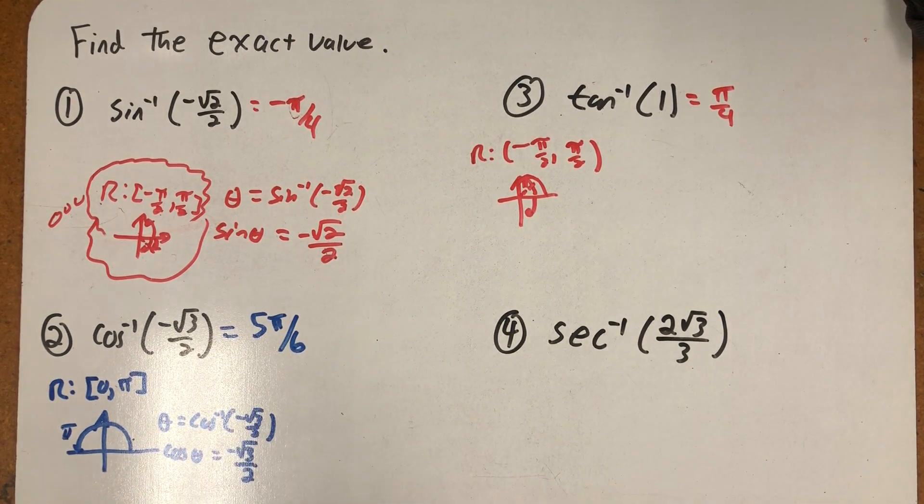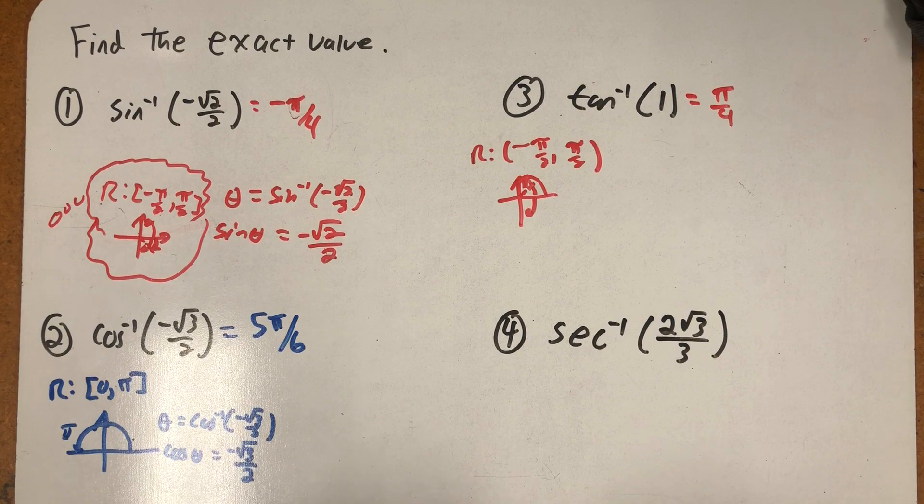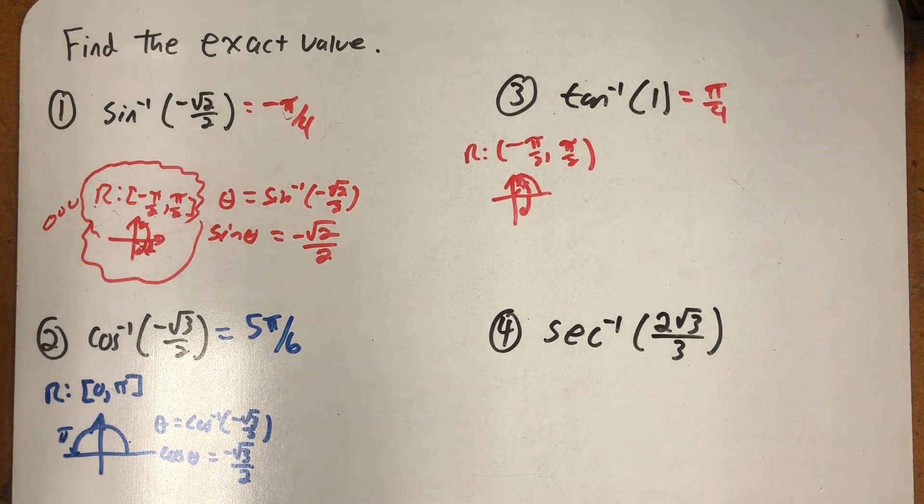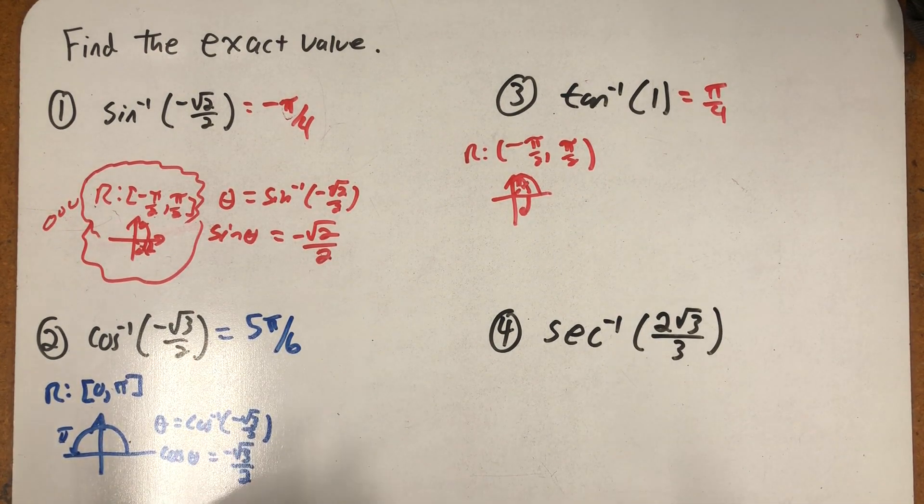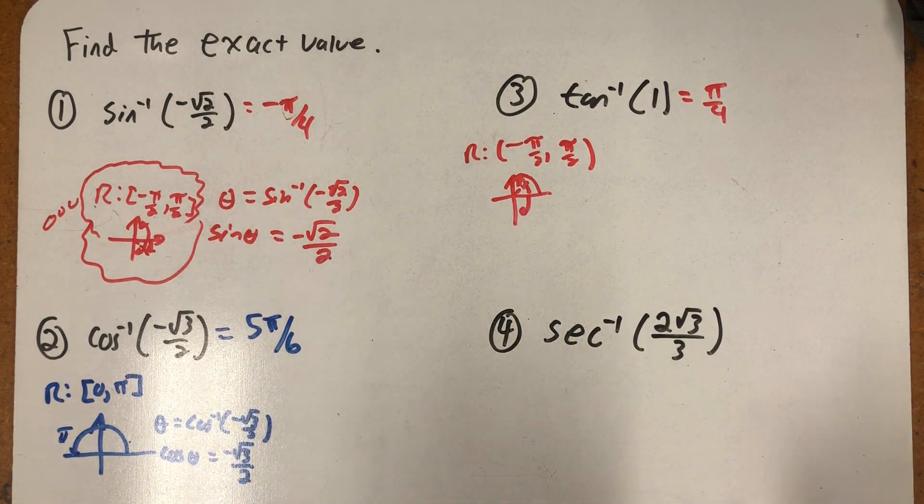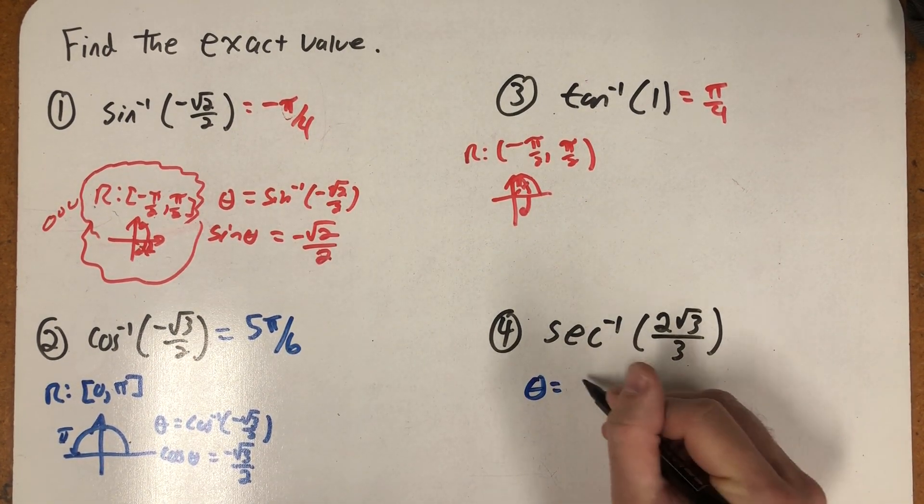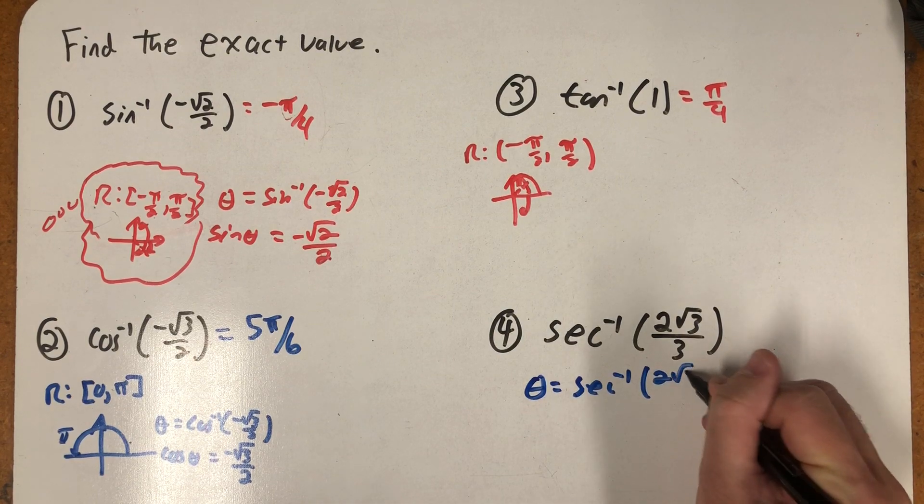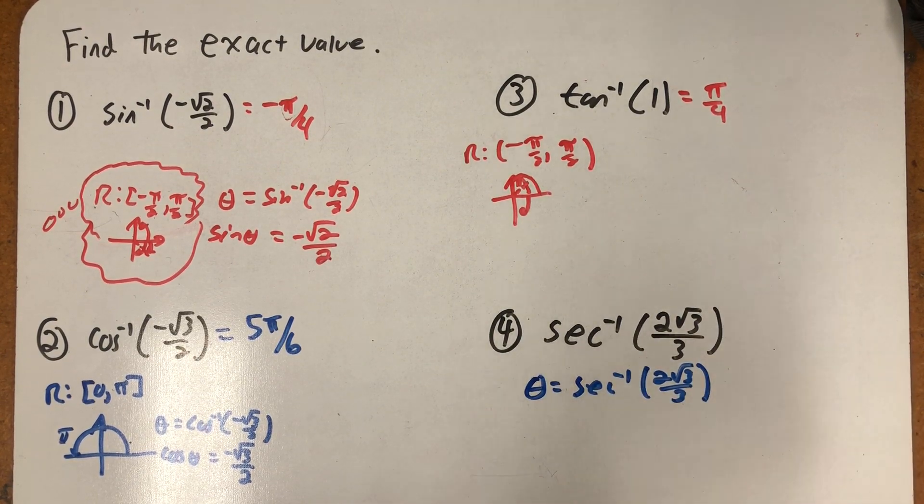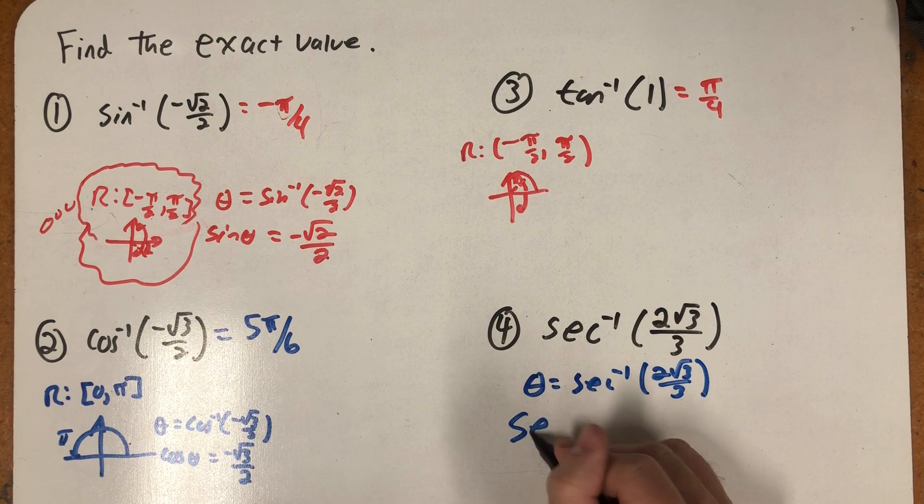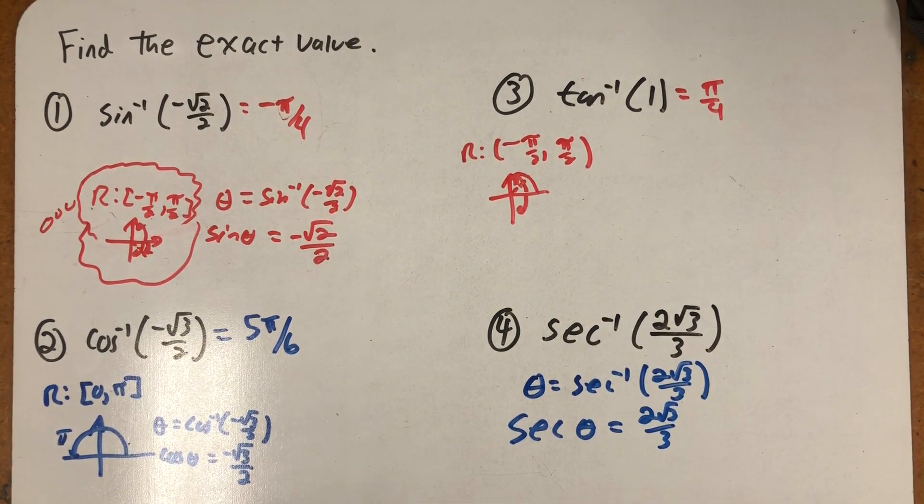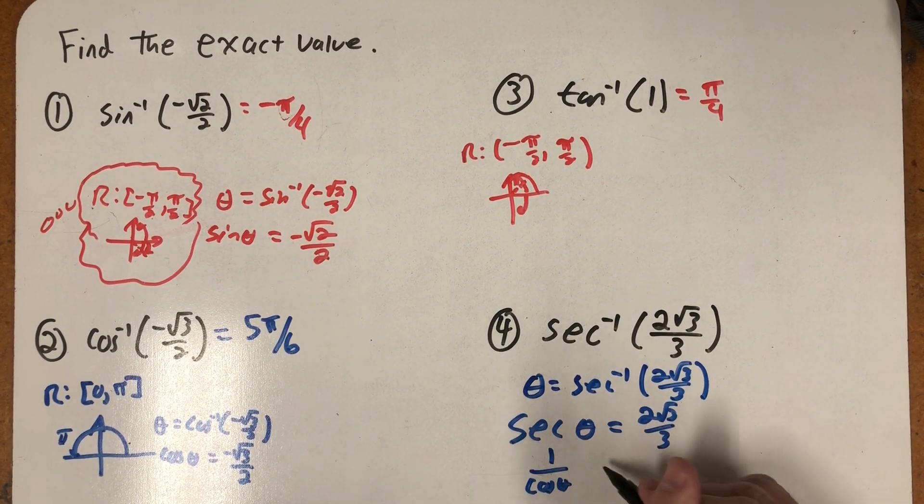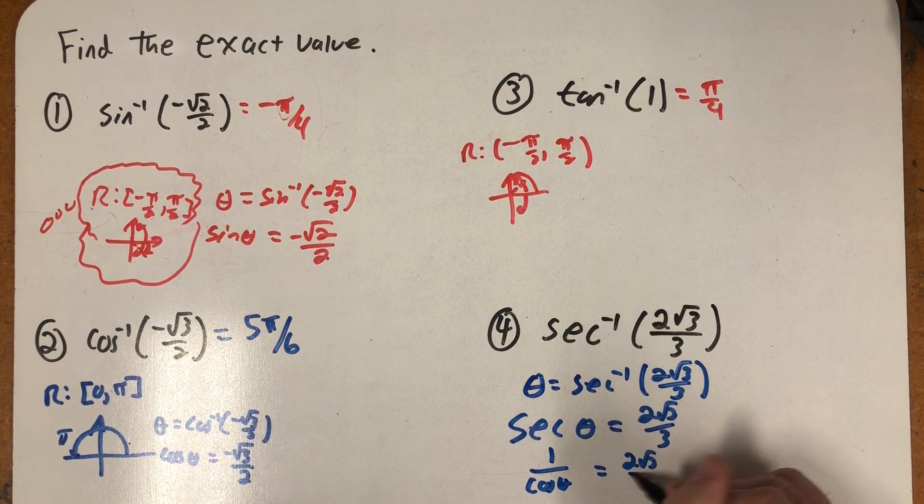Here I'm dealing with the inverse secant of two root three over three. And in a lot of trigonometry courses, in a lot of pre-calculus courses, you don't actually see a definition of inverse secant written down, but we can still think our way through this problem. So if I'd never met inverse secant before, I could write it down as a secant, just thinking about what inverse functions should do. And then I remember a secant is a one over a cosine.